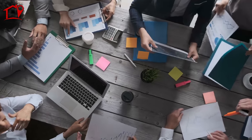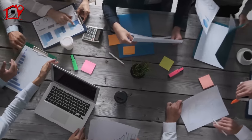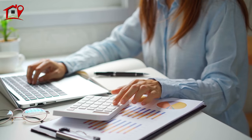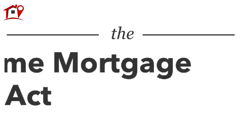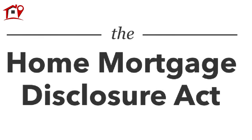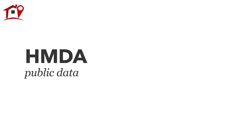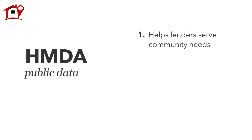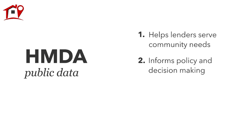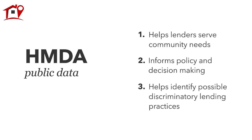Each year, thousands of banks and other financial institutions report data about mortgages to the public. Thanks to the Home Mortgage Disclosure Act, or HMDA for short, these public data are important because they help show whether lenders are serving the housing needs of their communities, give public officials information to make decisions and policies, and shed light on lending patterns that could be discriminatory.